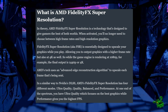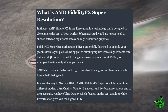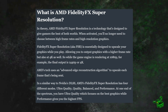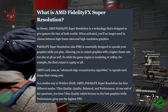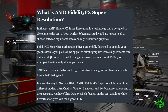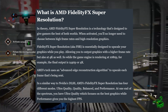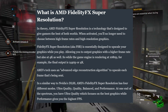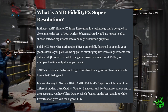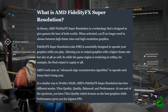FidelityFX Super Resolution, also known as FSR, is essentially designed to upscale graphics while you play, allowing you to output graphics with a higher frame rate but also at 4K. So while the game engine is rendering at 1080p, for example, the final output is 1440p or 4K. AMD's tech uses an advanced edge reconstruction algorithm to upscale each frame, similar to how Nvidia's DLSS works.